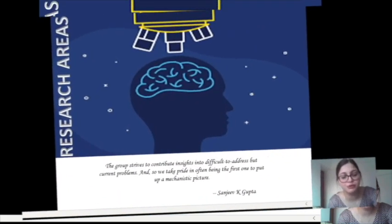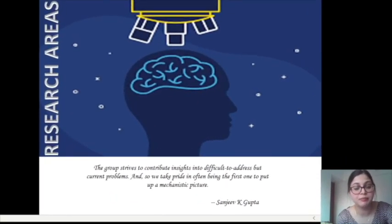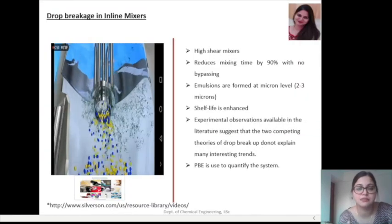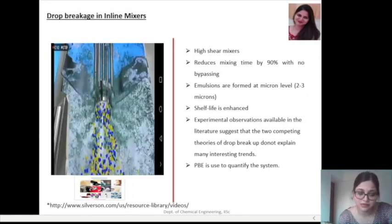The group strives to contribute insights into difficult-to-address but current problems. We take pride in often being the first one to put up a mechanistic picture. Basically, we are a modeling lab. We try to understand fundamental challenges in the field, investigate those, and develop models to capture the behavior. This model helps us to control the process, understand the physics which is hidden, and manipulate the process.